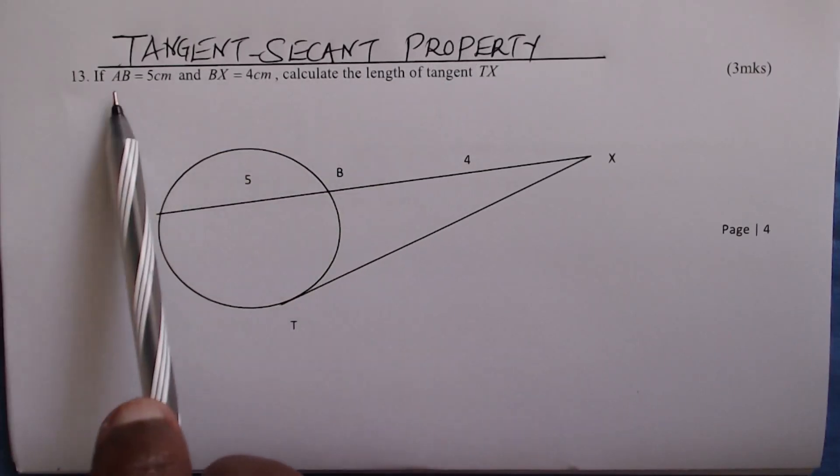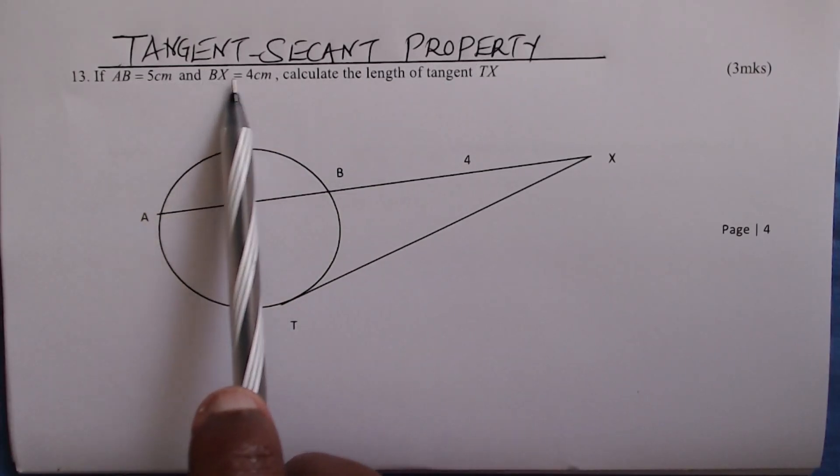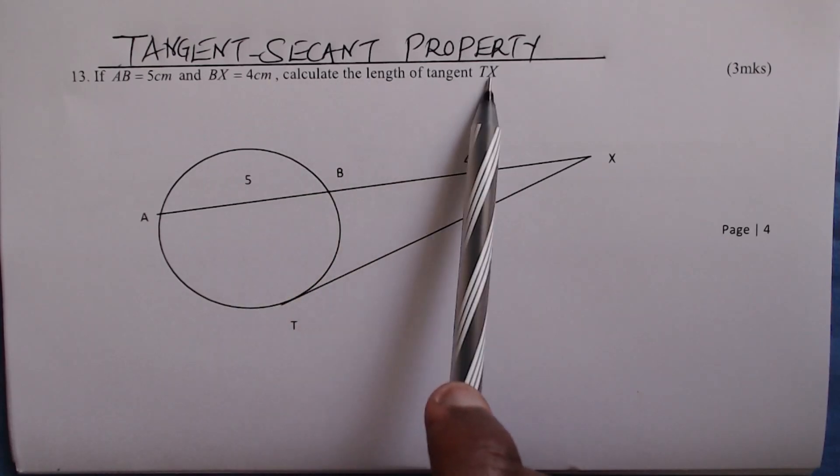The tangent-secant property. If AB equals 5 centimeters and BX equals 4 centimeters, calculate the length of tangent TX.